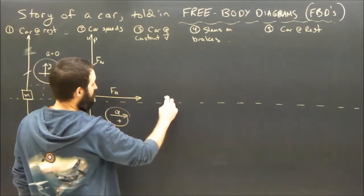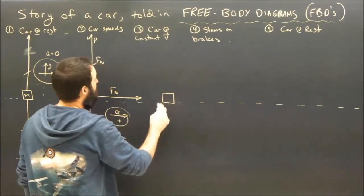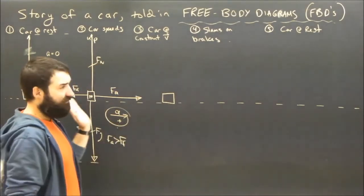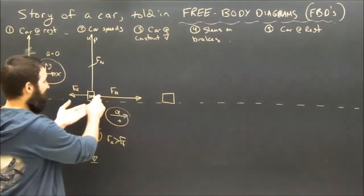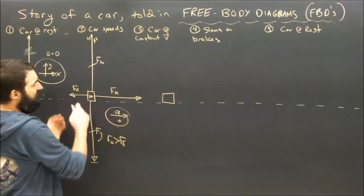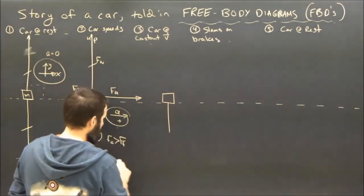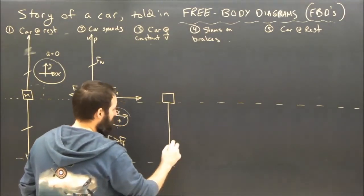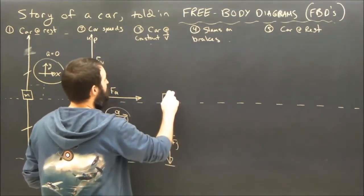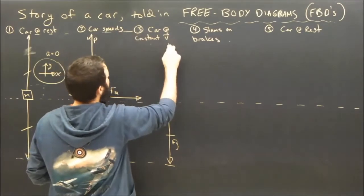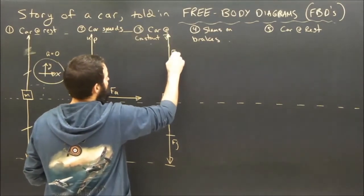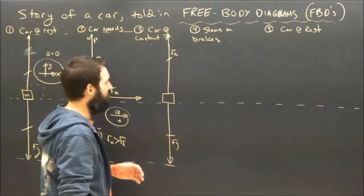Step number three. The car is at constant velocity. So the car was speeding up. The driver was pushing down the gas. There was this big applied force which was bigger than friction. But eventually the car stopped speeding up. Is there still gravity on the car? Of course there is. And there's still a normal force. And we're not shocked to see that FN and FG are still equal to each other.